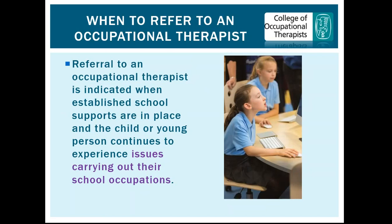Referral to an occupational therapist is indicated when established school supports are in place and the child or young person continues to experience issues carrying out their school occupations. If those supports have been exhausted and issues remain, an occupational therapist can offer a different perspective, do a more detailed analysis to work out where it's breaking down for the child, and work together to put in place a plan to support the children's school occupations.